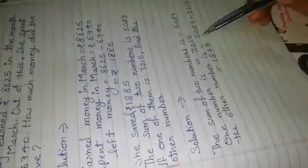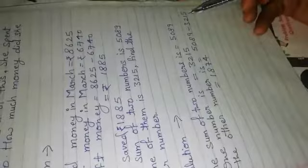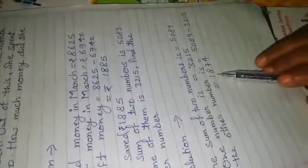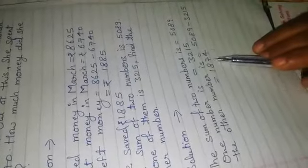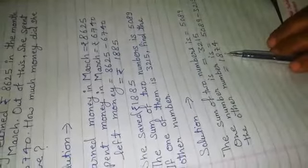We write here: the sum of two numbers is Rs. 5,089, one number is Rs. 3,215. When we subtract it, the answer is Rs. 1,874. So the other number is Rs. 1,874.